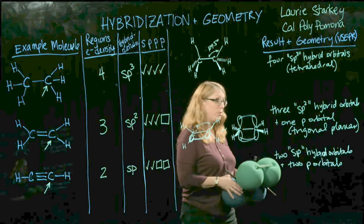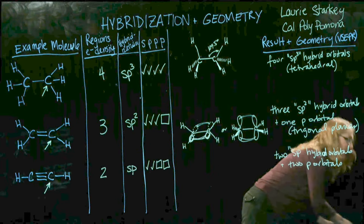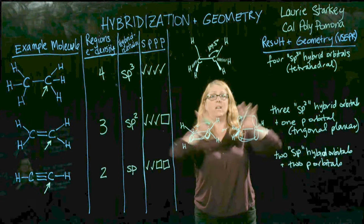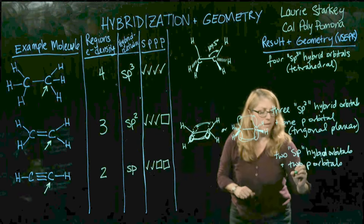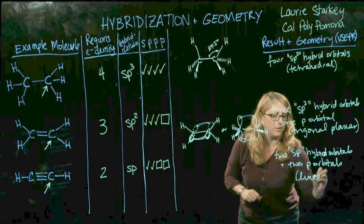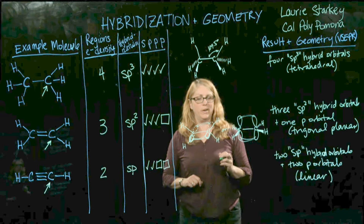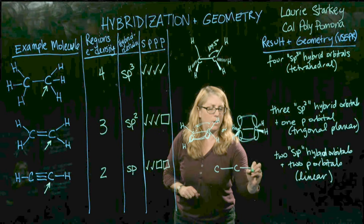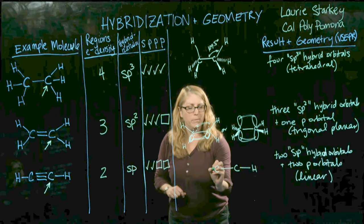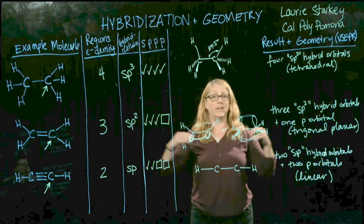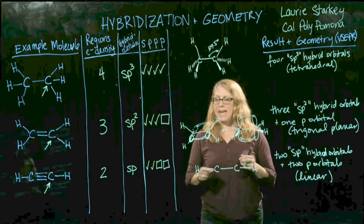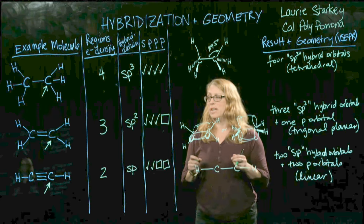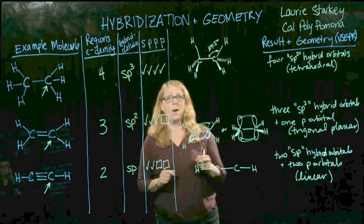Finally, how are we going to draw a triple bond? The triple bond has two regions of electron density. If we arrange those linearly, they are going to be as far apart as possible — 180 degrees. So the carbon-hydrogen bond, the carbon-carbon bond, and the next carbon-hydrogen bond are all 180 degrees. The two p orbitals that did not undergo hybridization are what we're going to use to make the two pi bonds.